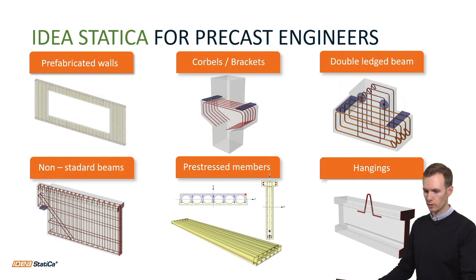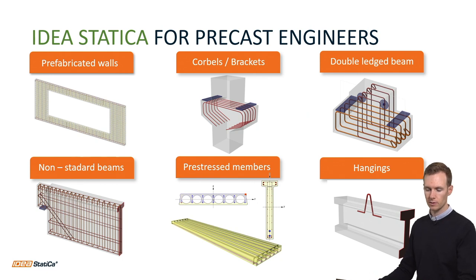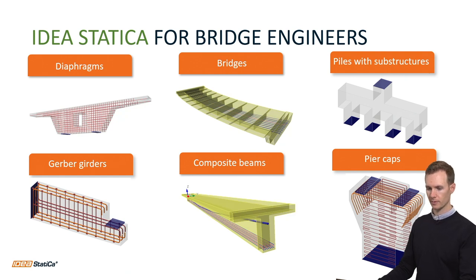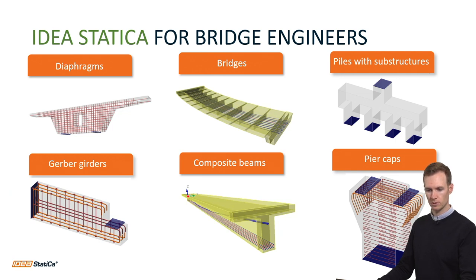It can also handle prefabricated walls — you can add supports or springs at the ends. It can do corbels, brackets, double-edged beams, all sorts of beams and pre-stressed members, hanging supports and so on. There are also tools for bridge engineers to look at diaphragms, general shape bridges, piles with substructures, composite beams, and pier caps.